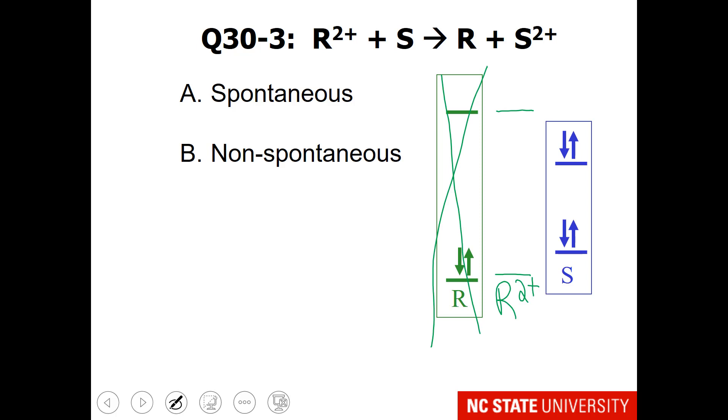Our last one involves R2 plus, so I've drawn that for you. Once again, the reducing agent gets oxidized. So this time, I believe our S species, which goes from zero to plus two, is our reducing agent.